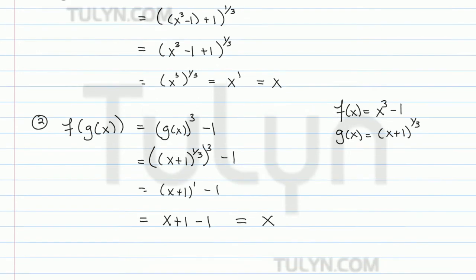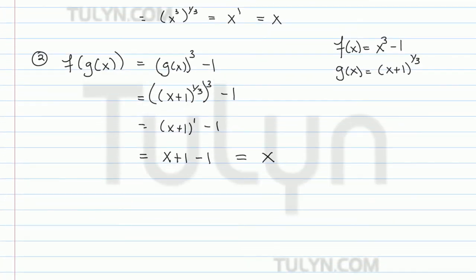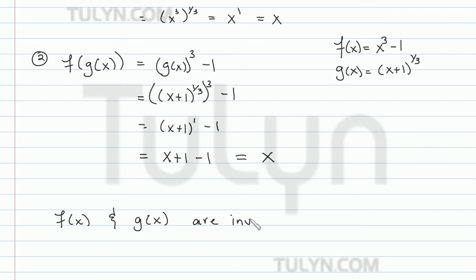This becomes x + 1 - 1, which gives us x. So f(g(x)) = x and g(f(x)) = x, meaning f(x) and g(x) are inverses of each other.